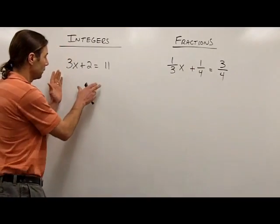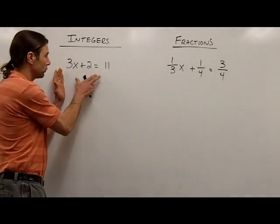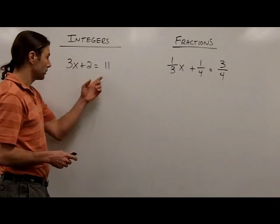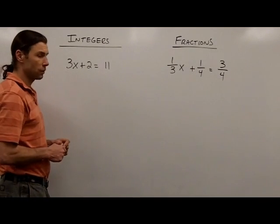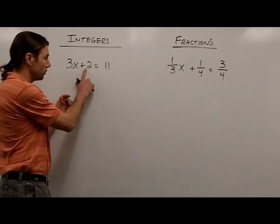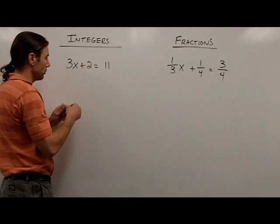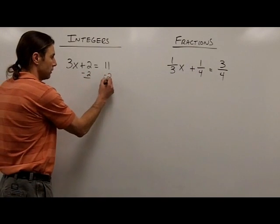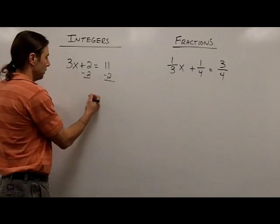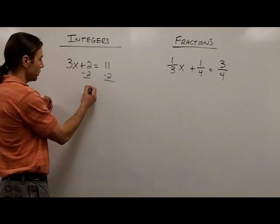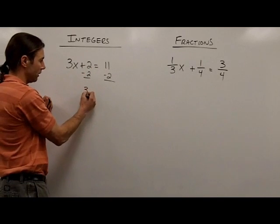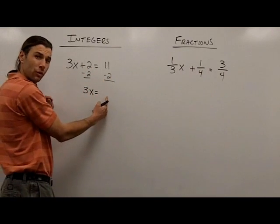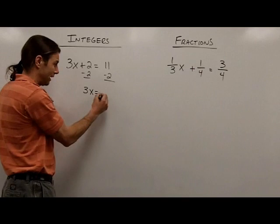For example, most folks can solve this equation here without any difficulty: 3x plus 2 equals 11. First, we're going to undo the addition of 2 by subtracting 2 from both sides. Rewrite the equation — we have 3x left on the left side, and 11 minus 2 on the right side gives us 9.